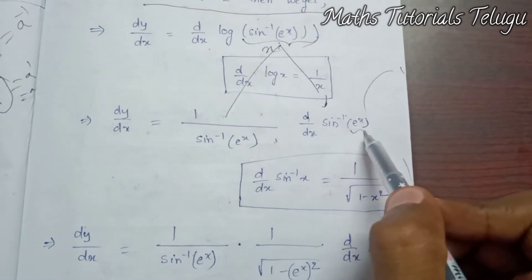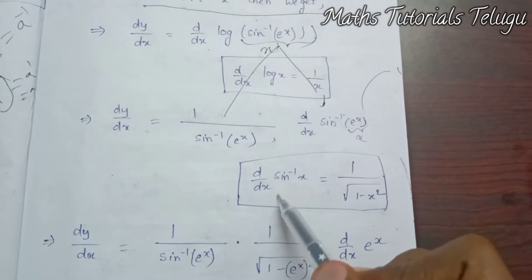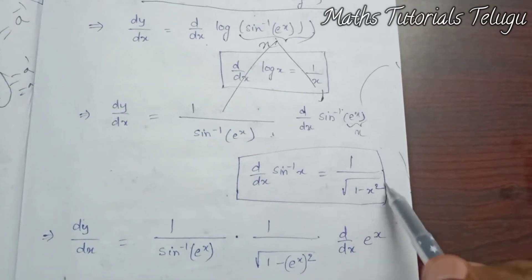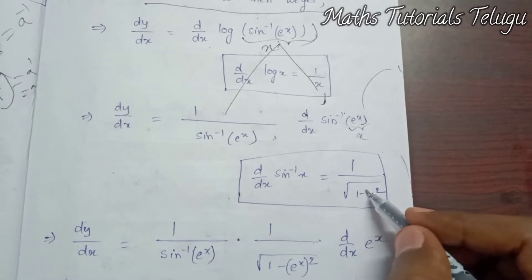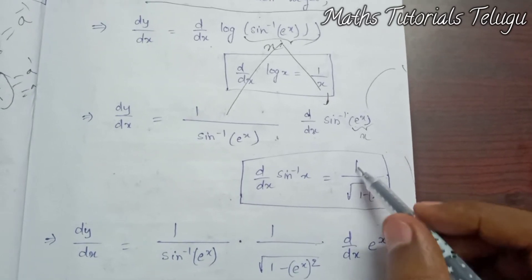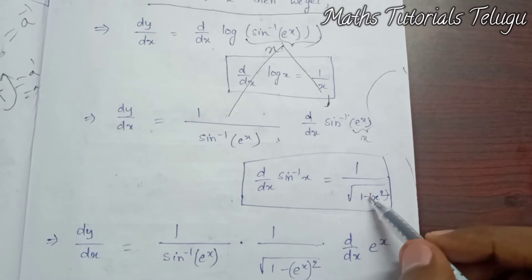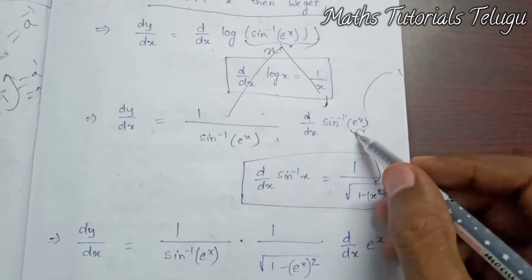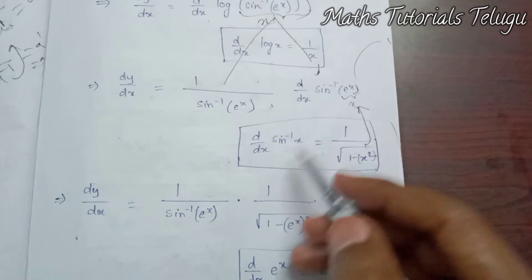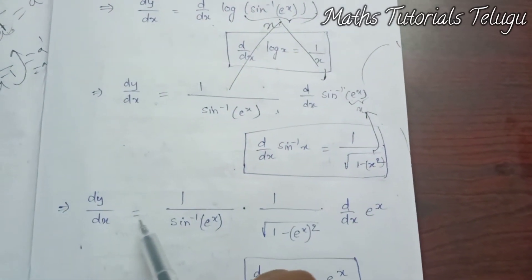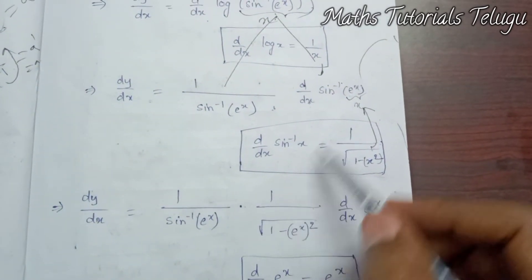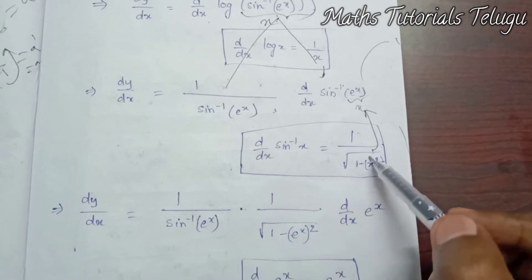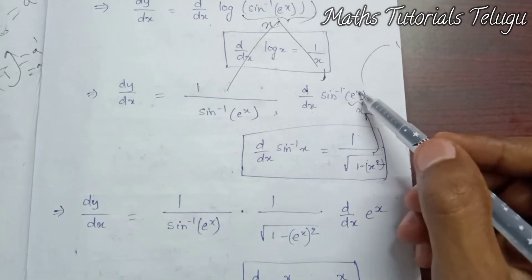Now find d/dx of sine inverse of e power x. The formula for d/dx of sine inverse x is 1 by square root of 1 minus x squared. Here x is replaced by e power x, so we get 1 divided by square root of 1 minus e power x whole square, and then multiply by the inner differentiation of e power x.